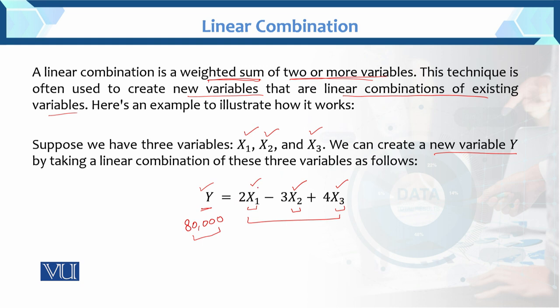Y is a new variable we've created with the weighted sum of these variables. We have 2X₁, meaning we multiply X₁ by 2 - the X₁ variable, whatever variable we have. Suppose I'm saying we do grocery 2 times, every 15 days we do grocery, so X₁ is grocery. Three children's fees we subtract, minus. Plus 4 weekly - entertainment, utility, transport - we call X₃. This is miscellaneous.